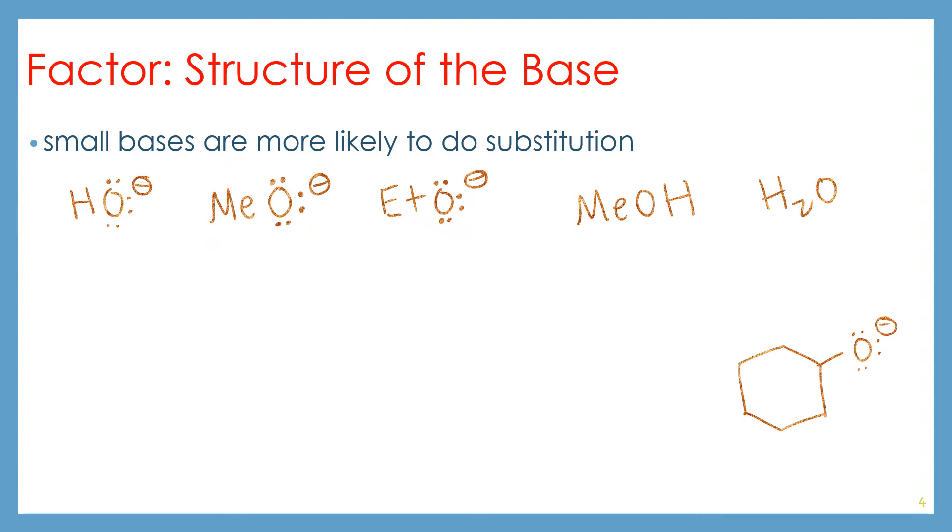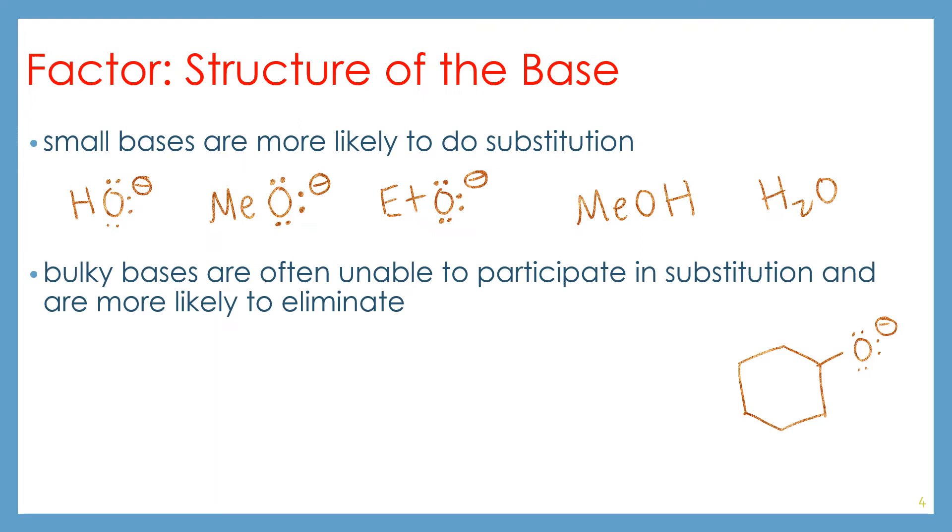These are all a lot more likely to go through substitution reactions, unless you add in another factor, such as adjusting the temperature. Bulky bases are usually unable to participate in substitution, and therefore are more likely to eliminate. So t-butoxide, phenoxide, isopropoxide is maybe a little on the edge here, and cyclohexanoxide.